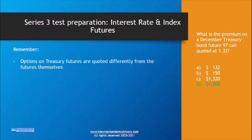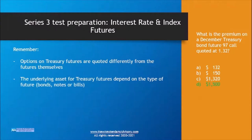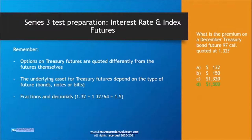Key takeaways: options on treasury futures are quoted differently from the futures themselves. The underlying asset for treasury futures depends on the type — bond, note, or bill — with bonds and notes at $100,000 nominal and bills at $1,000,000 nominal. Always be cognizant of the fractions and decimals: a quote of 1.32 for a treasury option really means 1 and 32/64, or 1.5%, which you then multiply by the nominal value to get the absolute dollar premium amount.